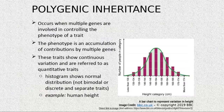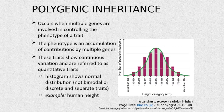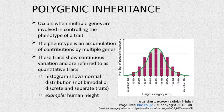Human height involves multiple genes controlling the phenotype of a trait — the phenotype is an accumulation of contributions by multiple genes. This is what we call polygenic inheritance.